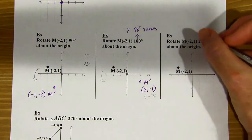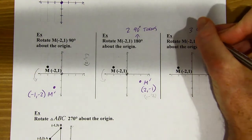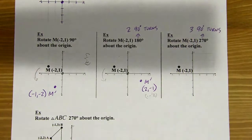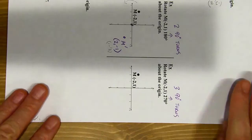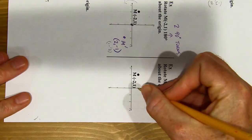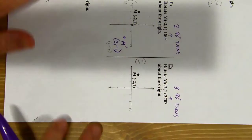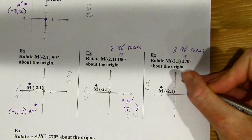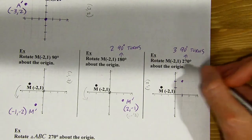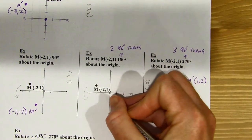Let's try 270 degrees. That's 90 times three, so three 90-degree turns. I flip my paper three times: one turn, two turns, three turns. Point M is at one to the right, two up. I make a note, turn my paper back up, go one to the right, two up — puts me right there. And there's the coordinates. That's my method.